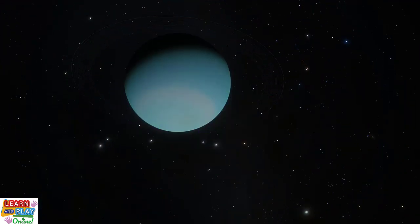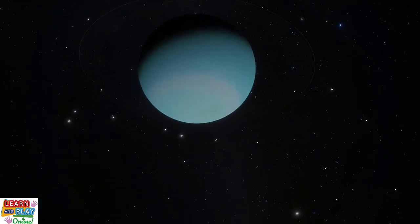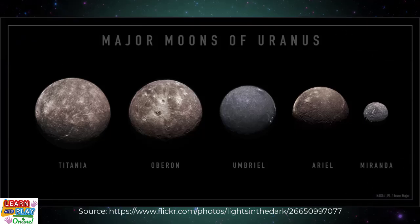To this date, Uranus has 27 known moons. The major moons of Uranus are Titania, Oberon, Umbriel, Ariel and Miranda.